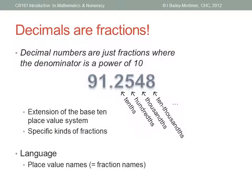Decimal numbers are just fractions where the denominator is a power of ten. So we have tenths, hundredths, thousandths, ten-thousandths, and so on.